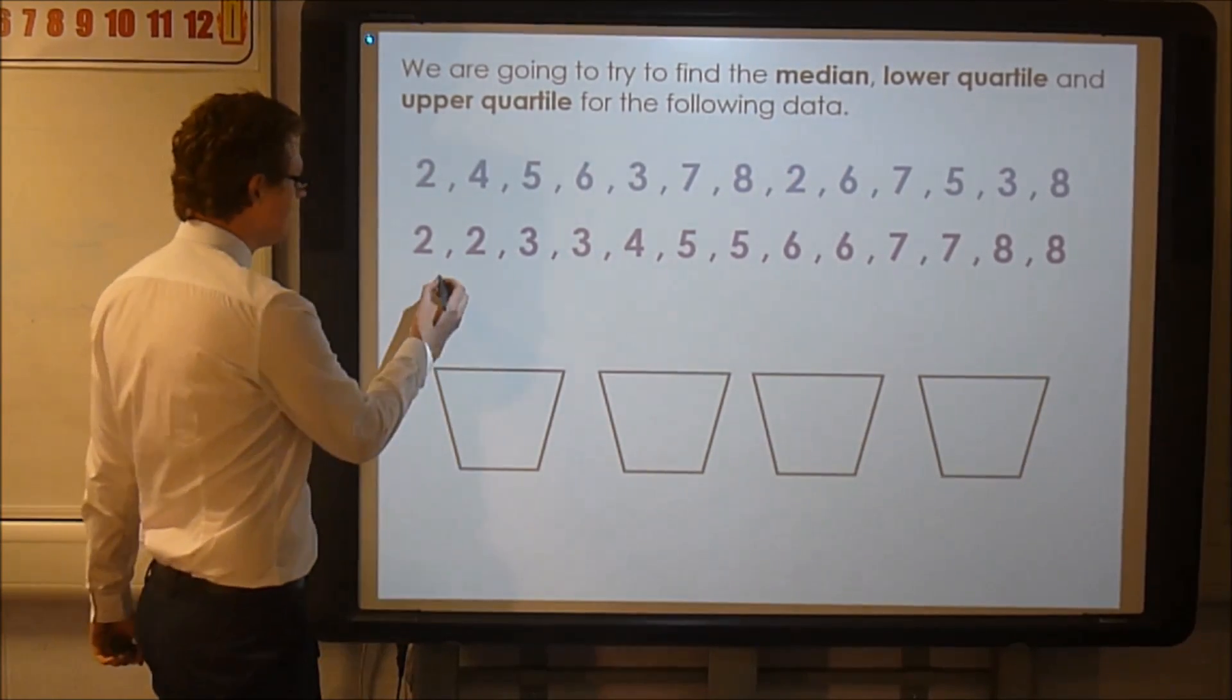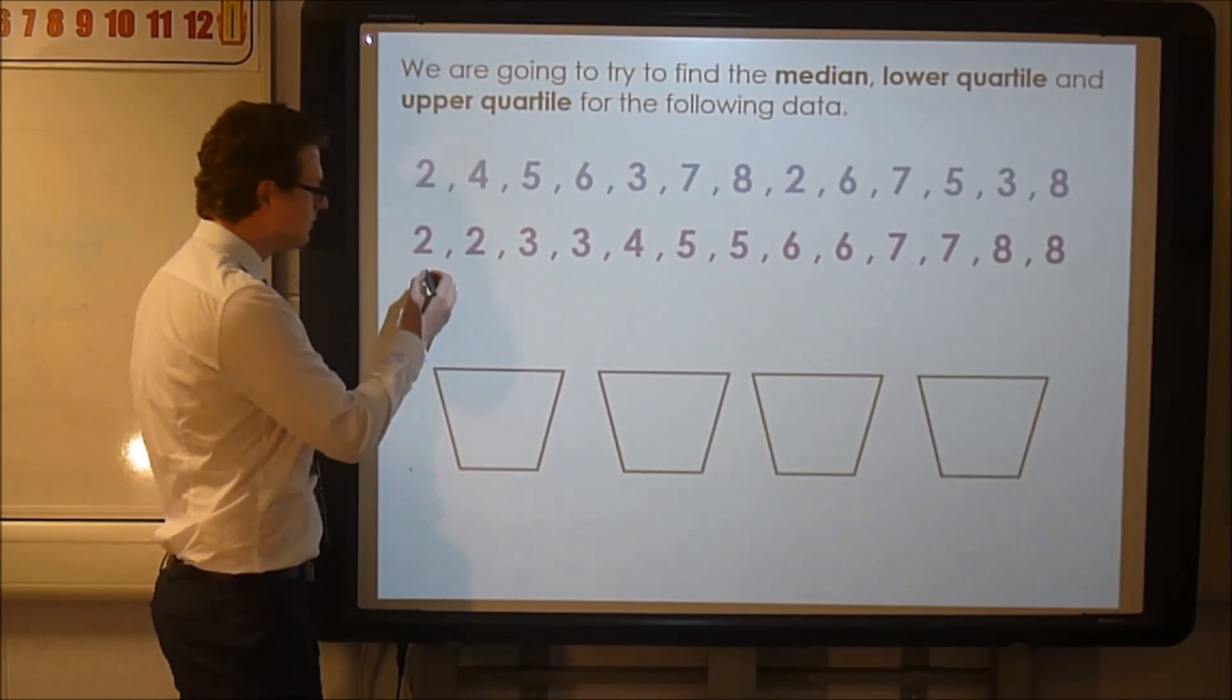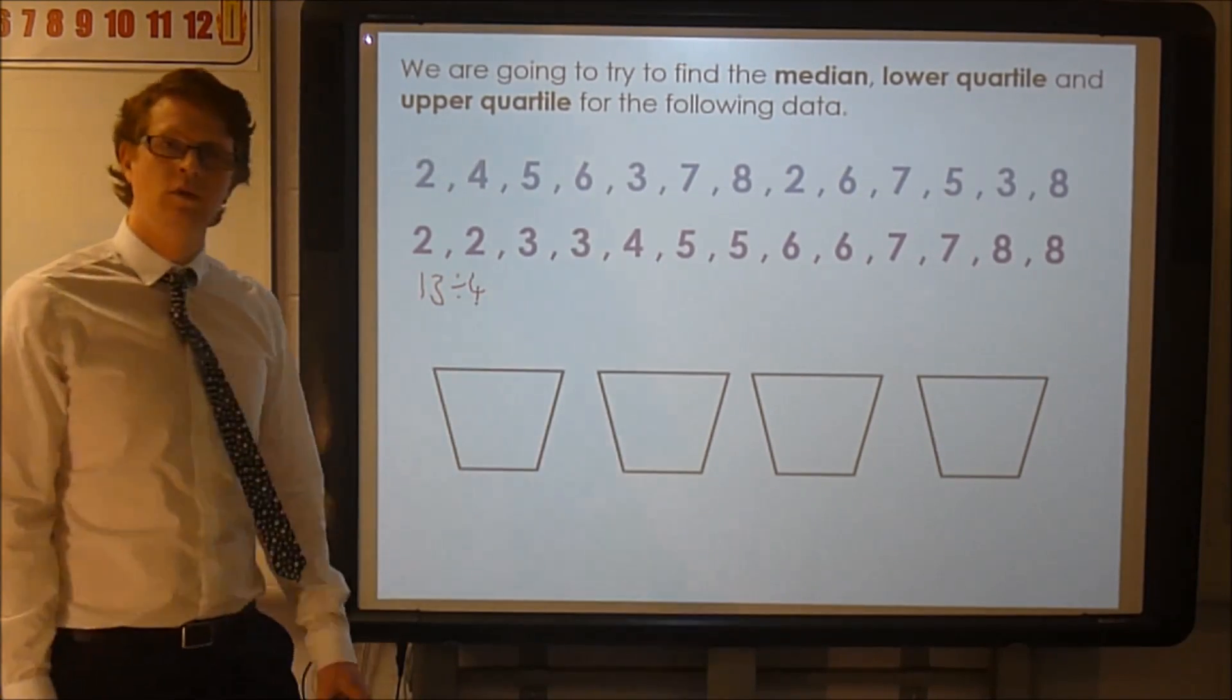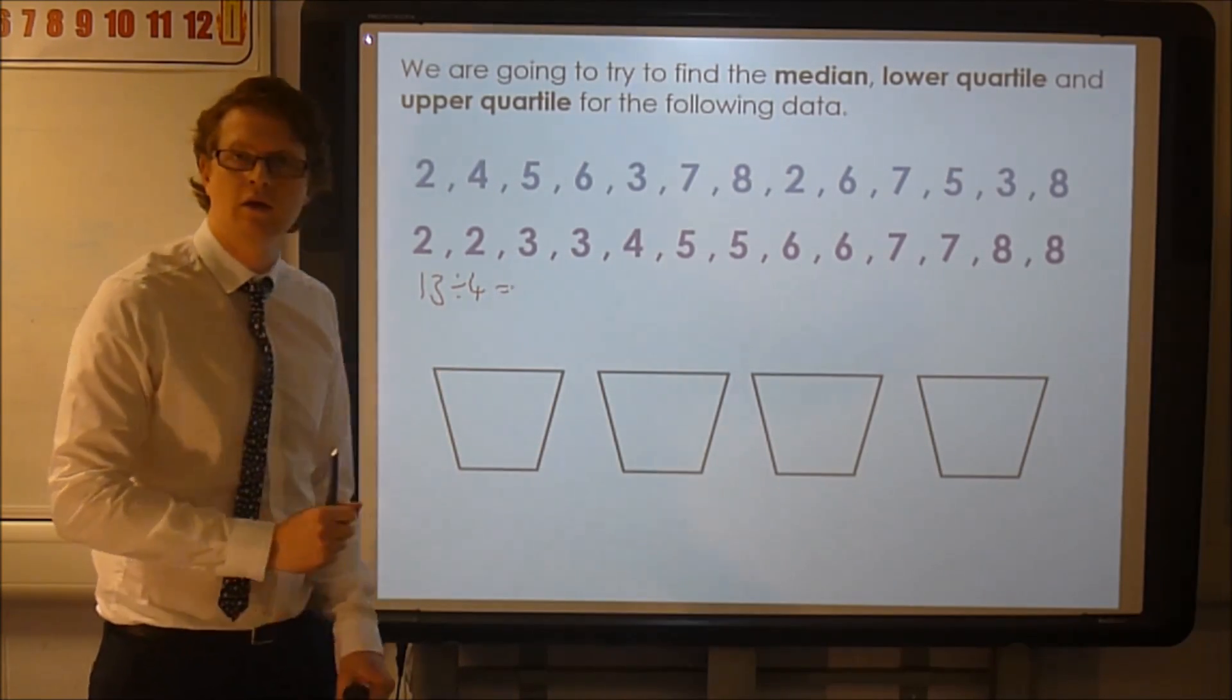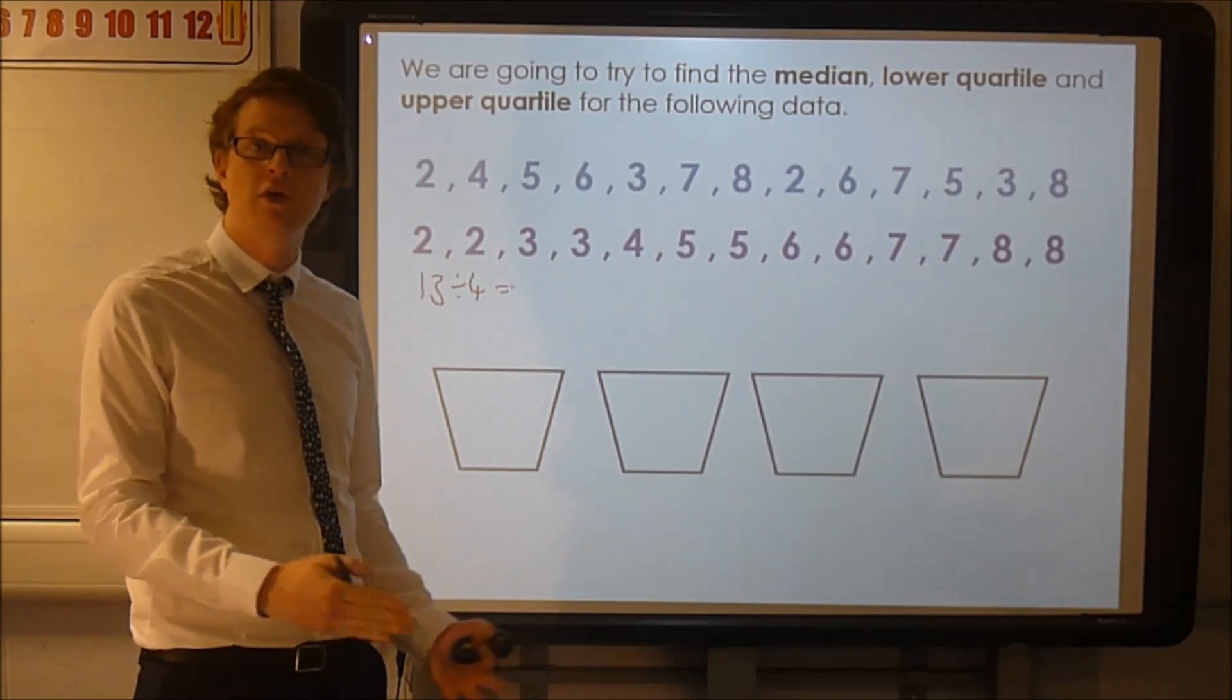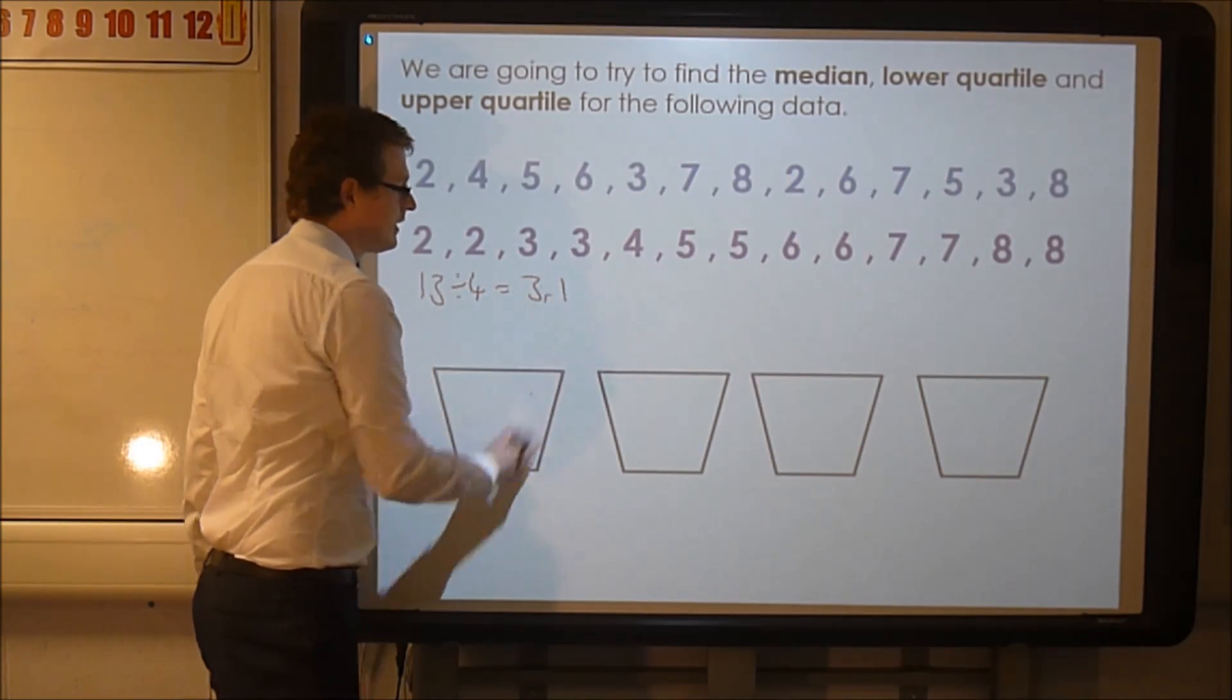And I'm going to imagine putting the data into these four parts. So let's see how many bits of data I've got all together. Now if you count these up, then we've got 13 bits of data. So if I get 13 bits of data and I split that into these four parts, we might have a slight problem. Now you can probably tell that in primary school we might say you might get three remainder one. And I'm going to use that notation here.